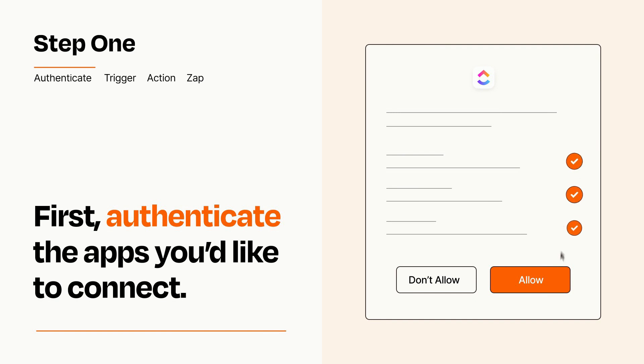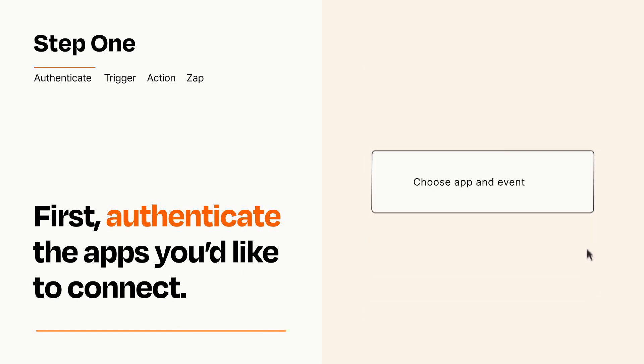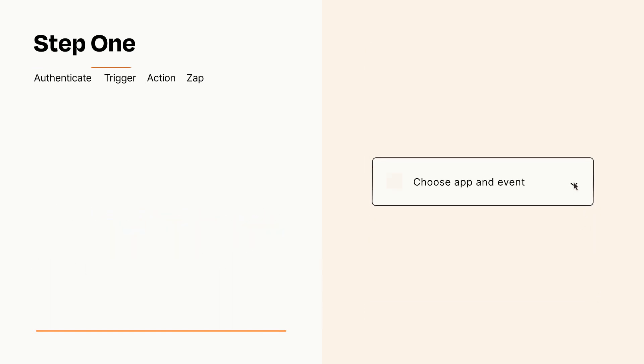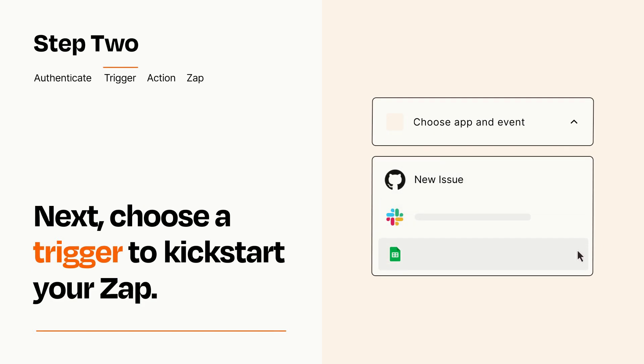Zapier meets industry standards for encryption when connecting with each of your apps. Now let's set up your trigger, which is the event that starts your Zap. Pick the trigger event that you want from the list.